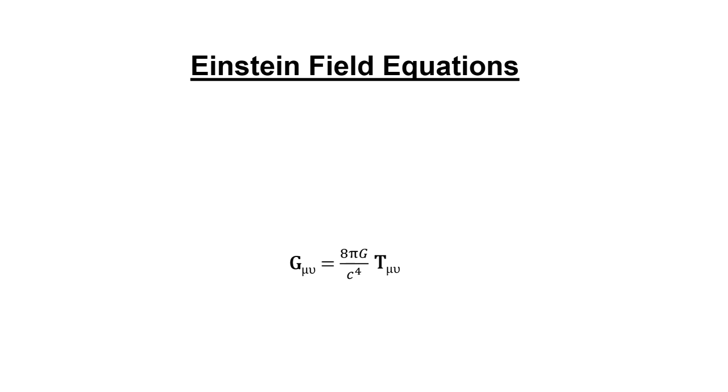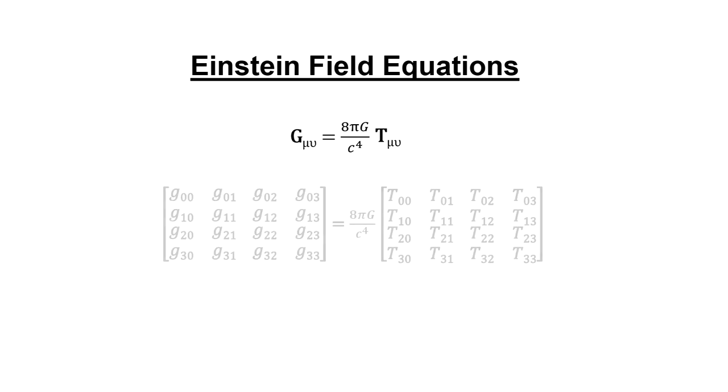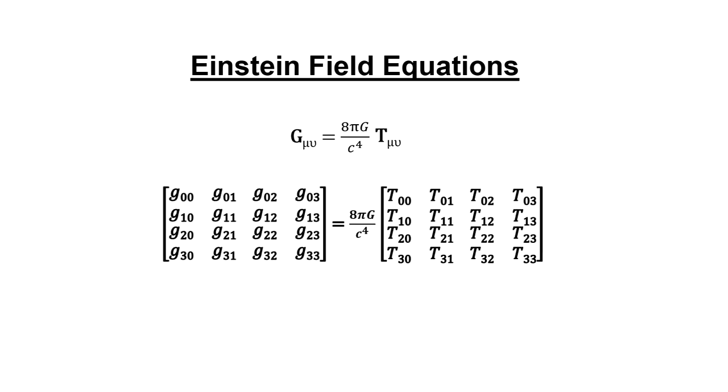This looks simple enough, but because they're tensors, it represents 40 equations with 40 unknowns. These are the Einstein field equations for general relativity.